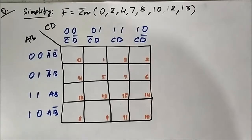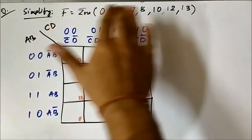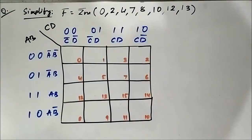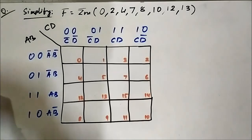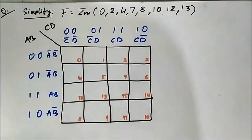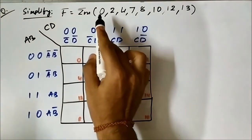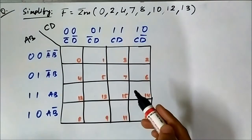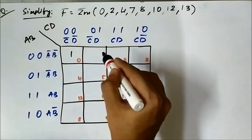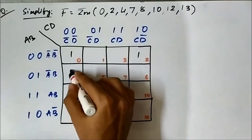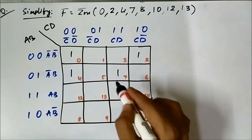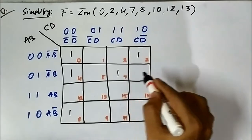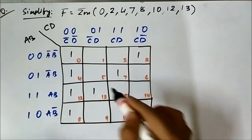This is the sixth question related to SOP KMAP simplification of a boolean expression. Again, we have the boolean expression given in terms of minterm values and the KMAP format ready. The minterm values are 0, 2, 4, 7, 8, 10, 12, and 13. We will map the function and then form groups.